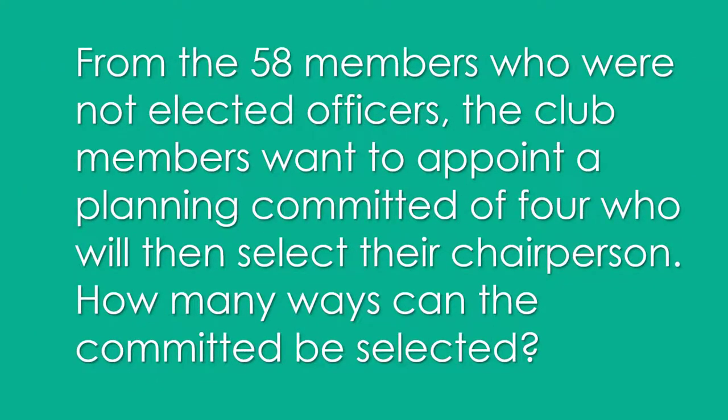The second part: from the 58 members who were not elected officers, the club members want to appoint a planning committee of four who will then select their chairperson. How many ways can the committee be selected?